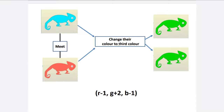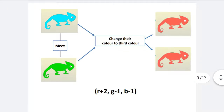When two chameleons meet, both change to the third colour. Looking at red and green meeting: r minus 1, g plus 2, b minus 1 — r and b each reduce by one, g increases by two. Next possibility: blue chameleon and green chameleon meet — both change to red colour, so r plus 2, g minus 1, b minus 1.